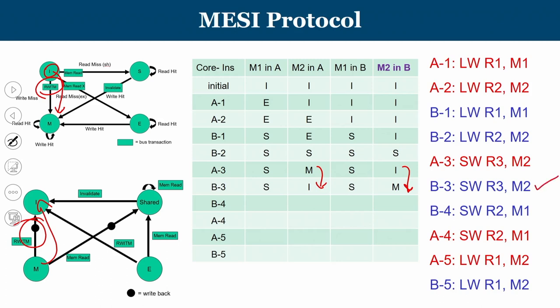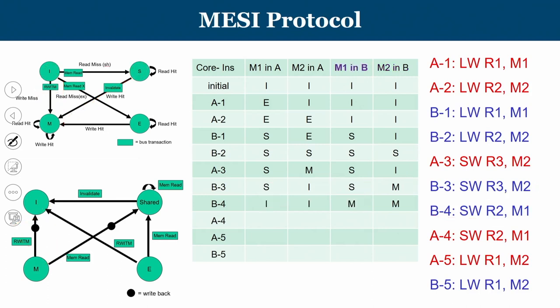B4 performs a store operation on M1. M1 in B is in the S state; a write causes B's M1 to move from S to M. An invalidate is placed on the bus, so A's M1, which is in the S state, transitions from S to I. The S-to-M transition is due to B4's write, and the S-to-I transition in A is caused by the invalidation.